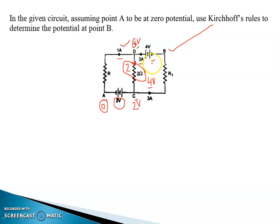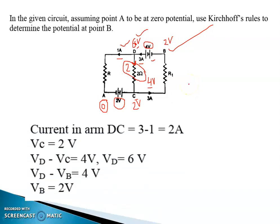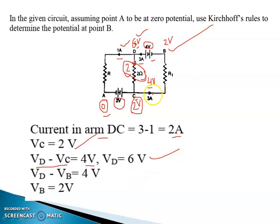A is at zero volts. Since there is a battery, if A is at zero volts then C will be at 2 volts. If C is at 2 volts and the potential difference across DC is 4 volts, then the potential at D should be 6 volts. This is the battery of 4 volts. If D is at 6 volts, then the potential at point B should be 2 volts. So Vd − Vc = 4 volts because 2 ampere through 2 ohm resistance gives 4 volts. Vd is 6 volts, so Vb is 2 volts. This is the solved question.